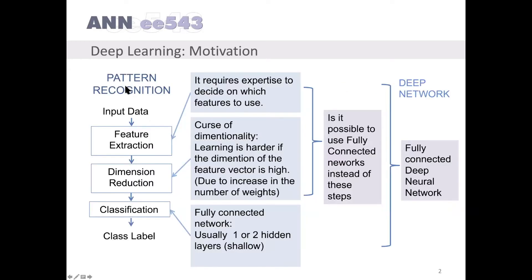In classical pattern recognition, we have a first feature extraction step and then comes dimension reduction. After the dimensions of the features are reduced, classification is applied and we obtain the class label.